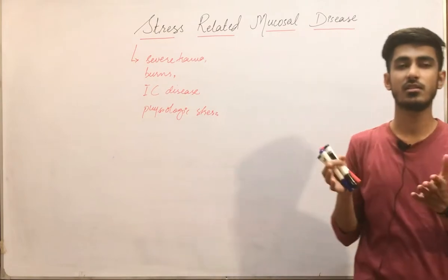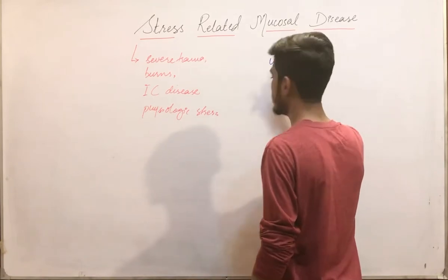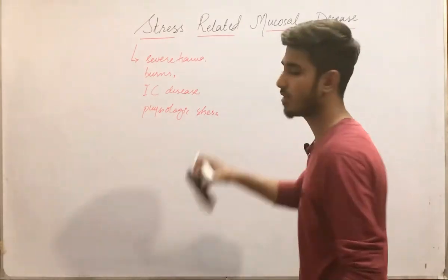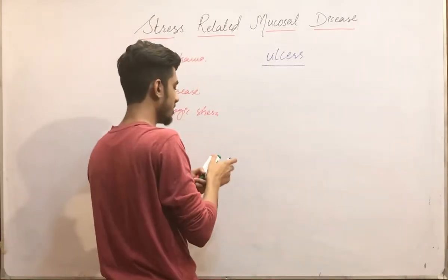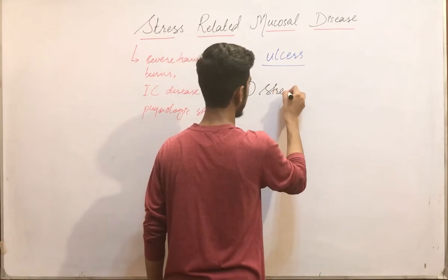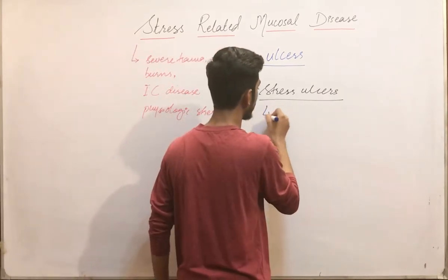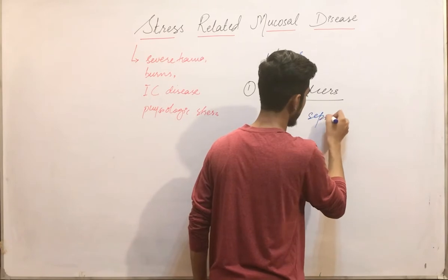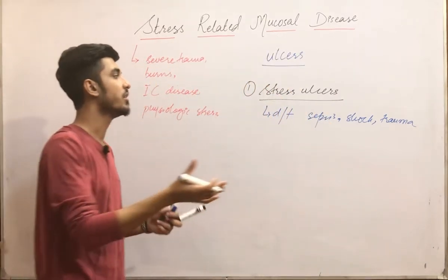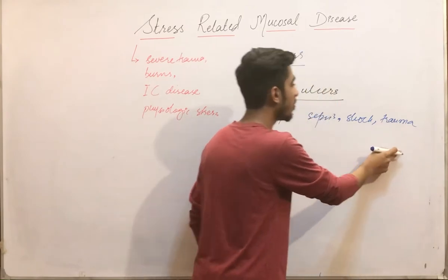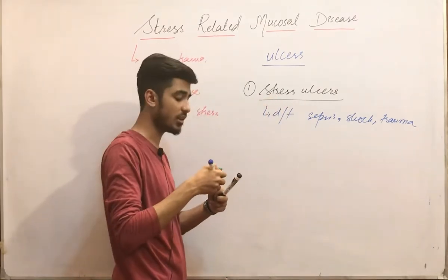The first stress-related condition we are going to study is ulcers. On the basis of these, we have divided the ulcers into three types. Number one: stress ulcers. Stress ulcers are those ulcers caused due to sepsis, shock, or trauma — meaning damage to the gastric mucosa due to sepsis, shock, or trauma.